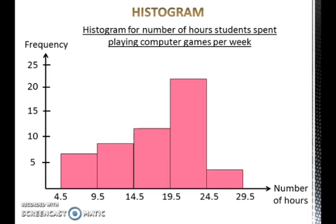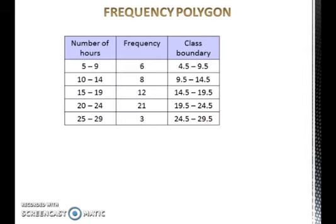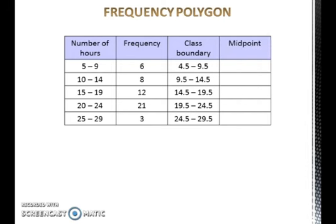Now let's look at how to draw a frequency polygon. To draw a frequency polygon, we must first find the midpoint for each class. The midpoint of a class is found by taking the sum of the lower limit and the upper limit of that particular class and dividing it by 2. This is how we find the midpoint.